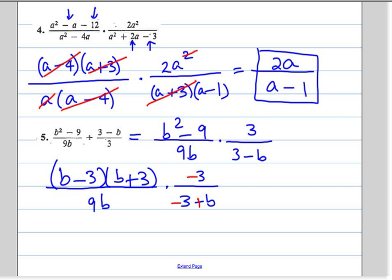Now we've got a B minus 3, negative 3 plus B, that's the same thing as B minus 3, so we can reduce that with the B minus 3 over here. And then negative 3 gets reduced with the 9, the 9 becomes a 3 and negative 3 becomes a negative 1. That's all we can reduce.